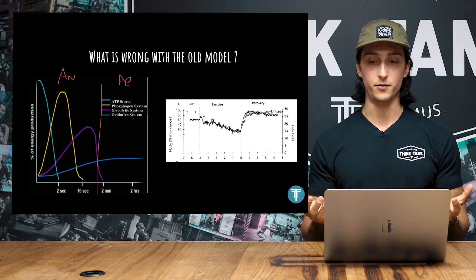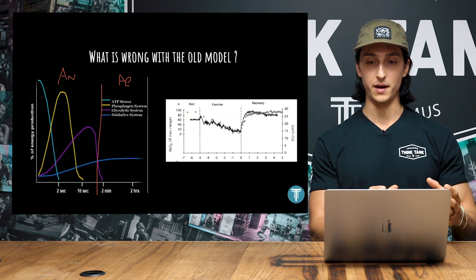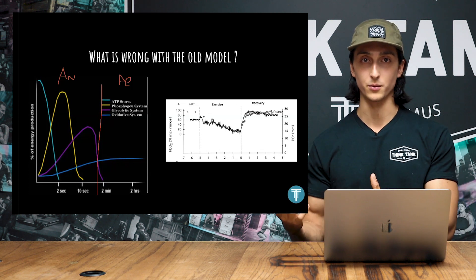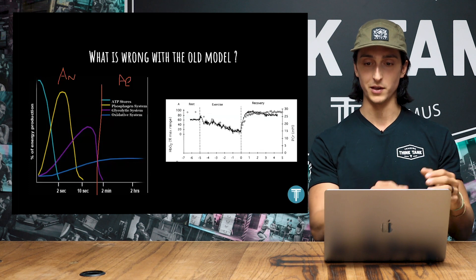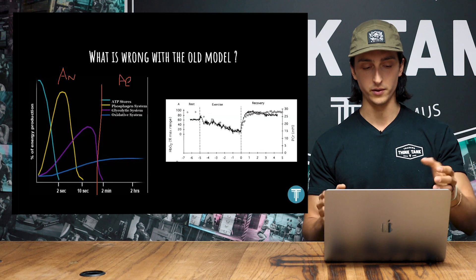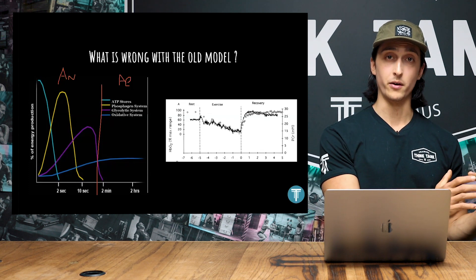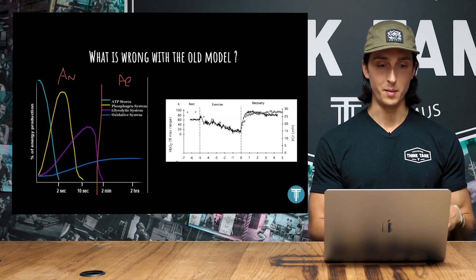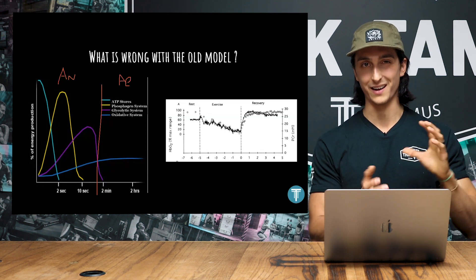But the issue is that there's a lot of flaws with these frameworks. Many of you are probably familiar with this chart on the left. You see it in pretty much every coaching course you take and a lot of coaching textbooks and manuals. And if you've ever taken any formal exercise science training, you've definitely seen this image. And when we look at this model, there's some good things about it. For example, if we look at the sub-two seconds, it shows that ATP stores are the primary source of energy, but it acknowledges that all these processes are overlapping in time.